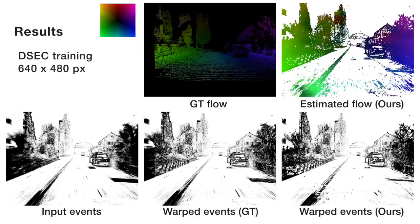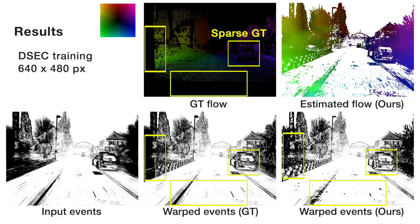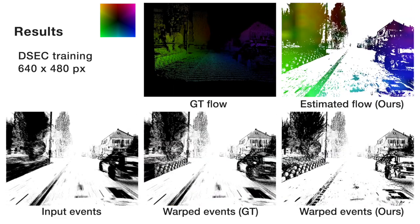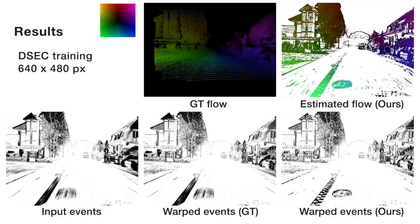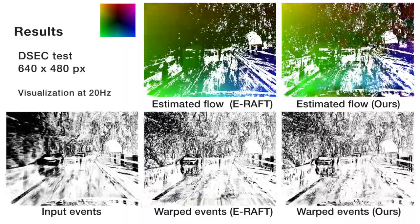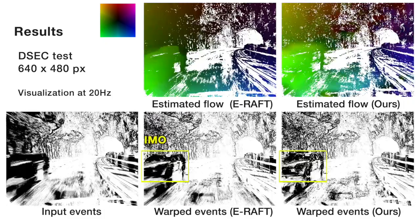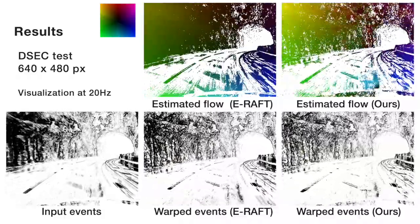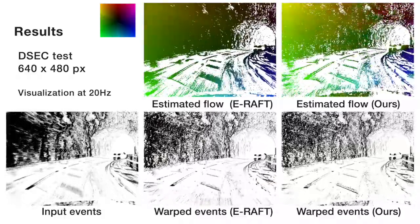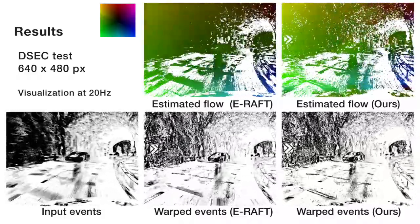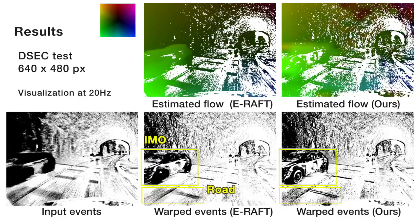These are results on DSEC, a more recent dataset. The camera has higher spatial resolution and records more complex driving scenes. For test sequences in the DSEC benchmark, we compare our method with supervised learning methods. It is remarkable that our method can estimate even independently moving objects, which supervised learning methods may suffer from due to the lack of ground truth labels.